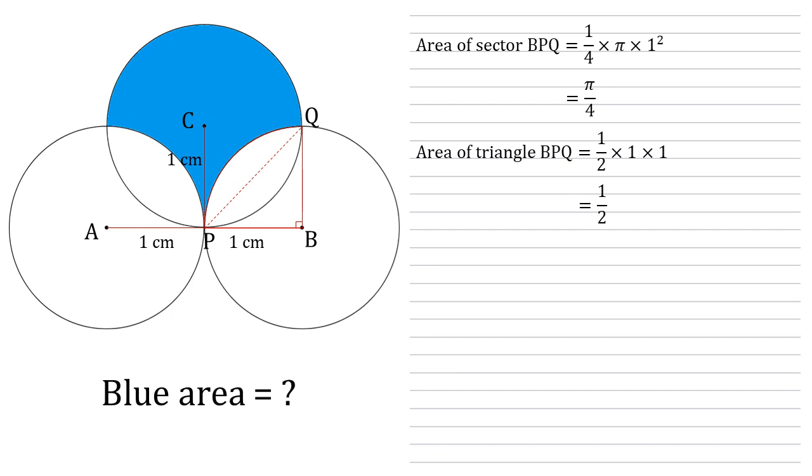Now we've found the sector and the triangle, we can use these to work out the area of the segment that's created by the chord PQ and the circumference of the circle. Well, that just must be the sector minus the triangle. So π over four minus one half.